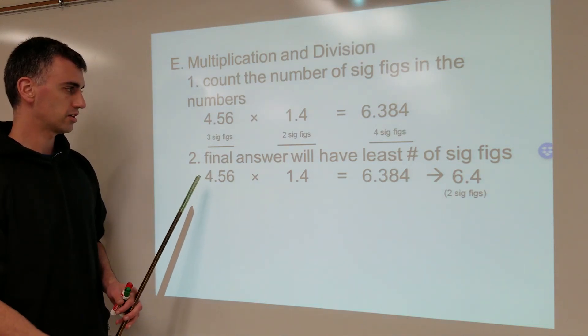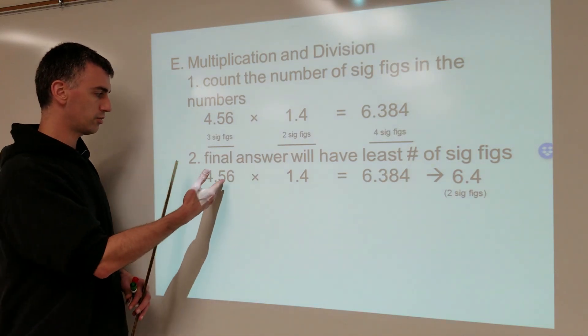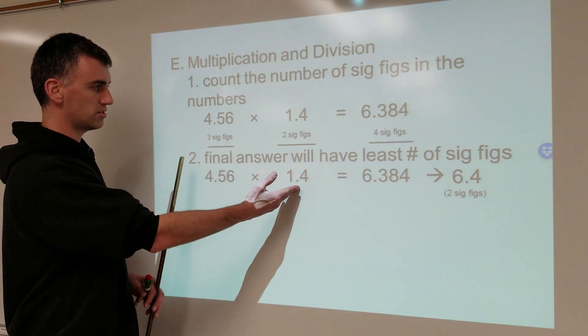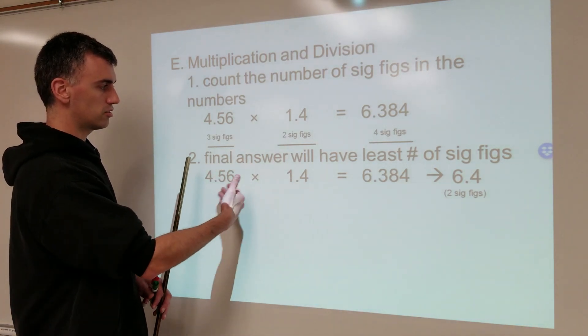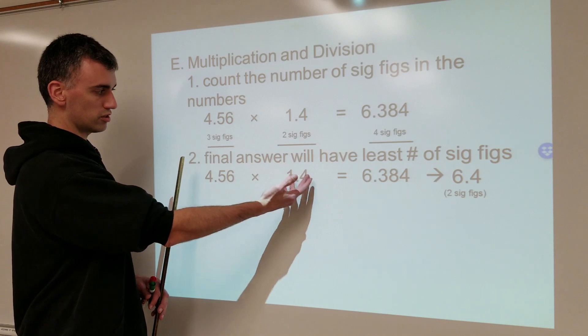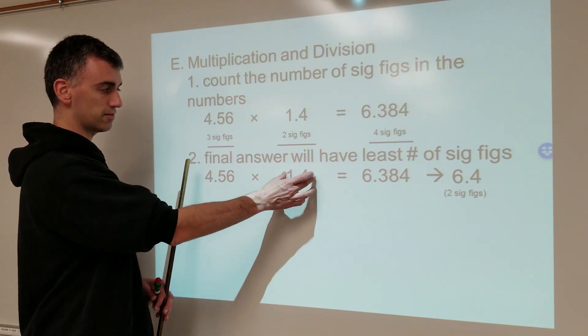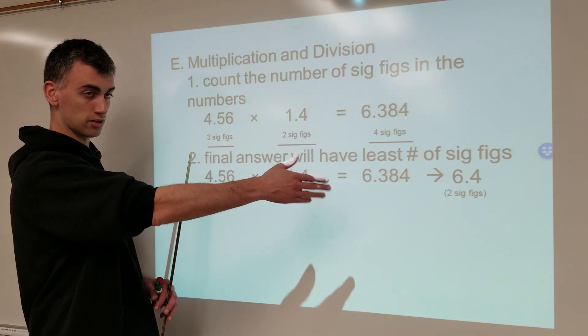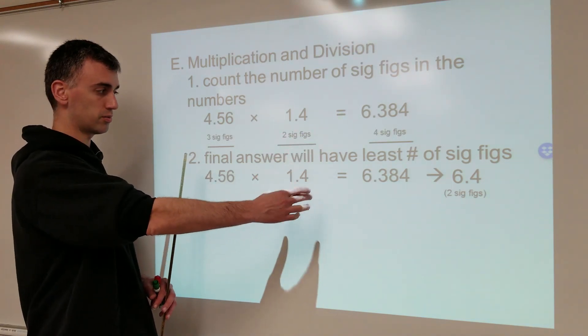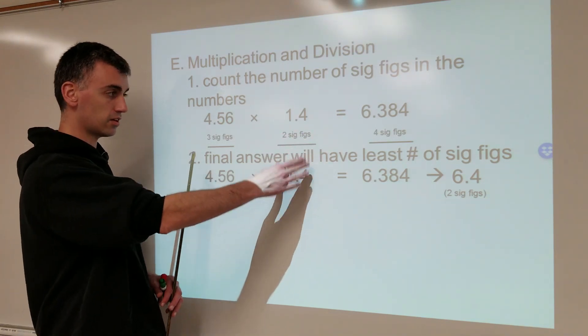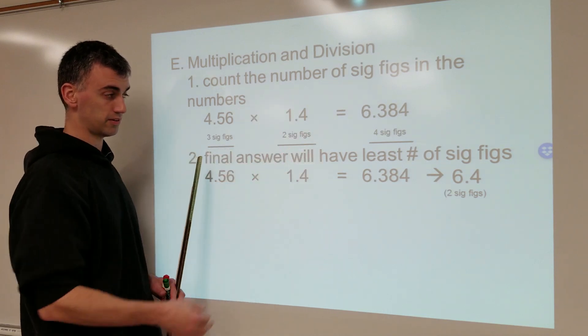So that is why: three sig figs, two sig figs — this one has fewer significant figures, and since it has the fewest, it determines how to round the final answer. Because two sig figs here, two sig figs there.